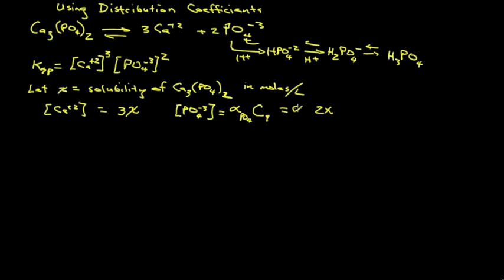So if we multiply that by alpha, we should have the concentration of phosphate in terms of the solubility X. So now we can go back to our KSP equation and introduce these terms. For calcium, 3X cubed, times phosphate squared. So that's 2 alpha X, that's squared.